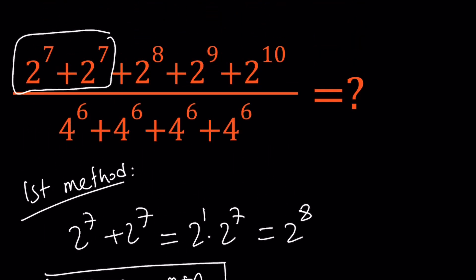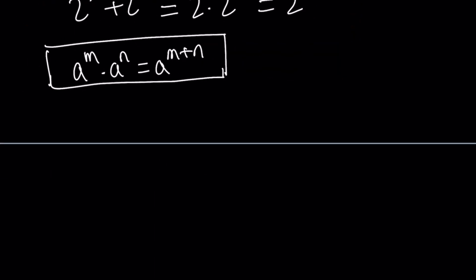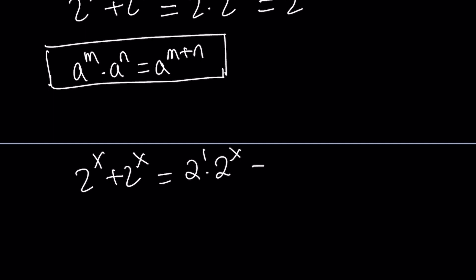So that gave us 2 to the 8th power. Notice what happened to 2 to the 7th power: when I added it to itself, the exponent went up by 1. If you add 2 to the x and 2 to the x, you get 2 times 2 to the x, and it just becomes 2 to the power of x plus 1. So adding them together basically increases the exponent by 1.